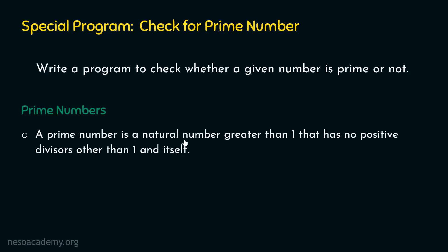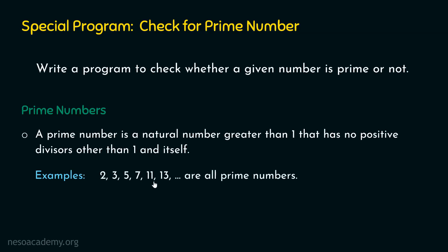A prime number is a natural number greater than 1 that has no positive divisors other than 1 and itself. It is a positive number which starts from 2 and has no positive divisors other than 1 and itself. In other words, a prime number is not divisible by any other number except 1 and itself. Examples are 2, 3, 5, 7, 11, 13, and so on.